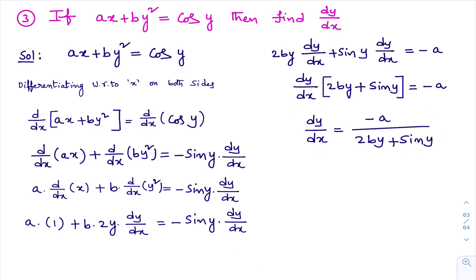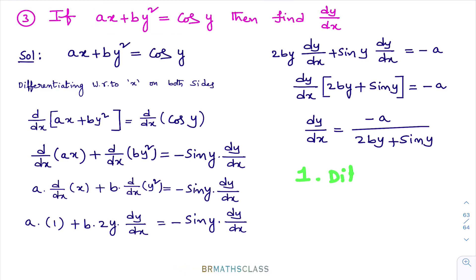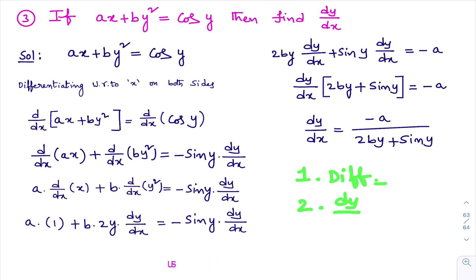They asked to find dy/dx, and we have calculated dy/dx. Throughout this implicit differentiation, keep three points in mind: first, identify that the given function is implicit; second, differentiate with respect to x on both sides; then write all dy/dx terms at one side, remaining all terms the other side; and take dy/dx common. Once you take dy/dx common, rest of all things are very easy — you can easily write dy/dx. In the next class also, we'll do problems based on implicit differentiation.